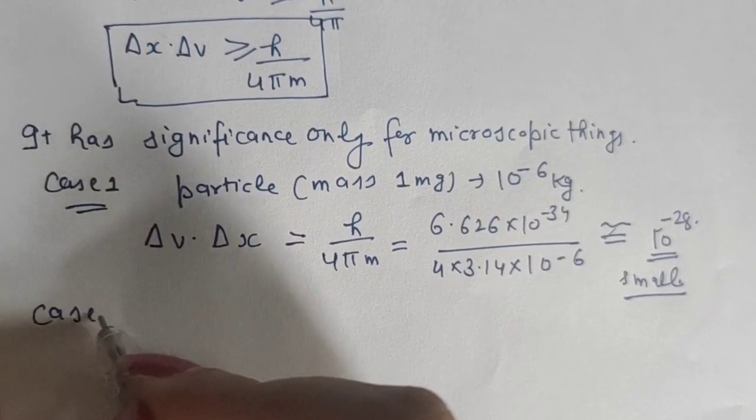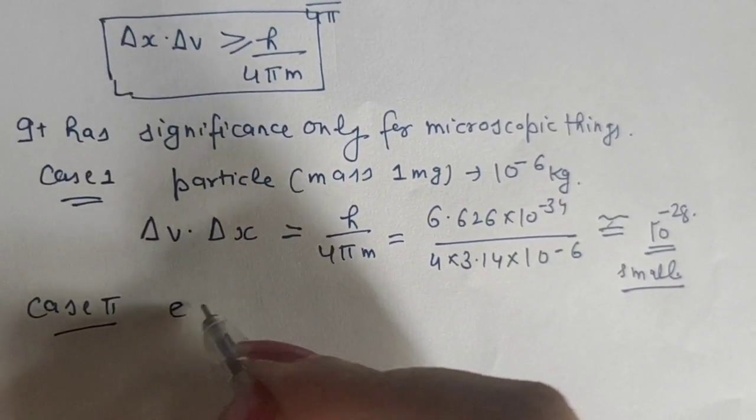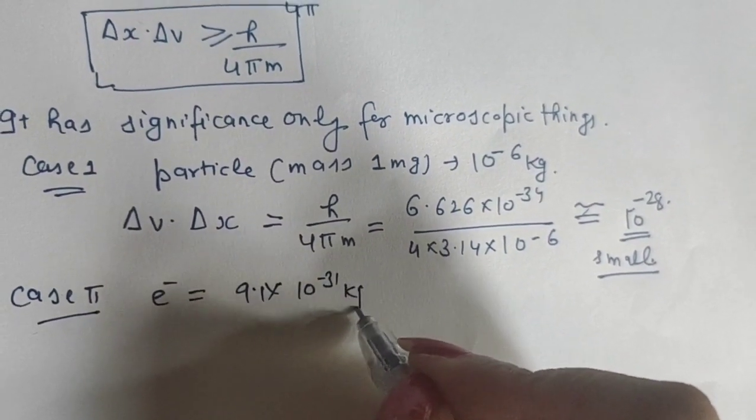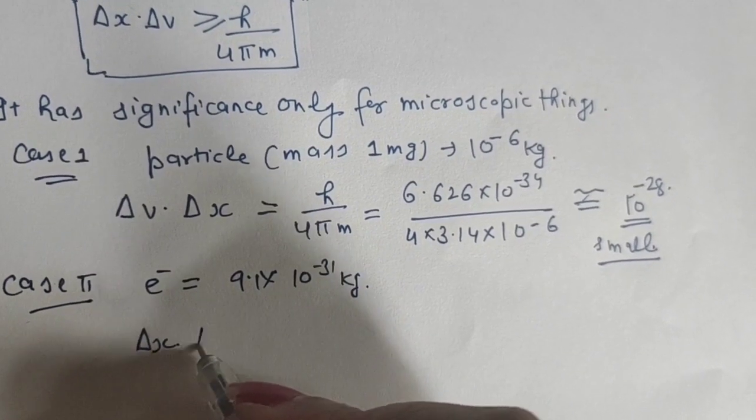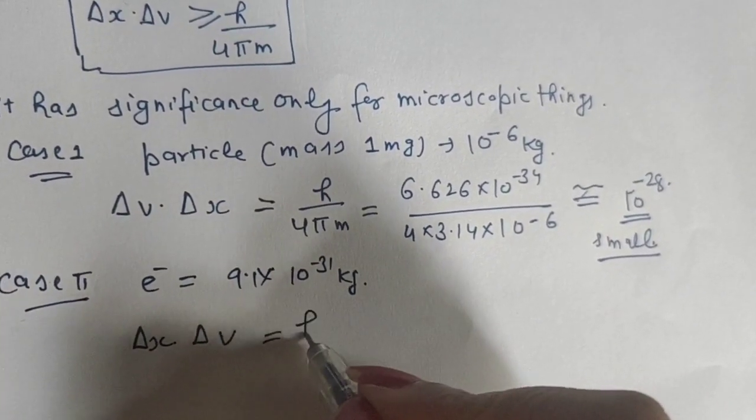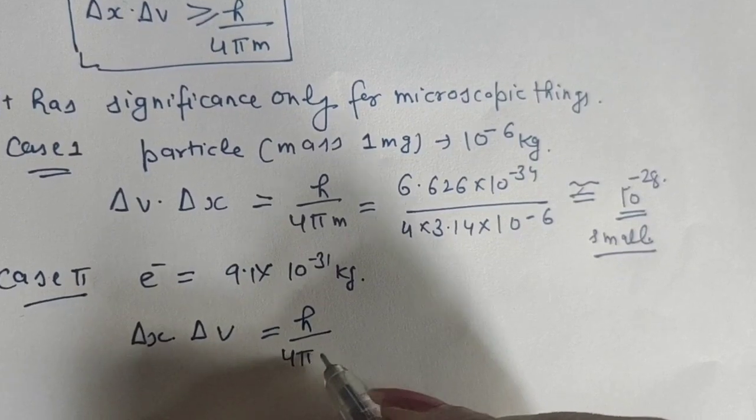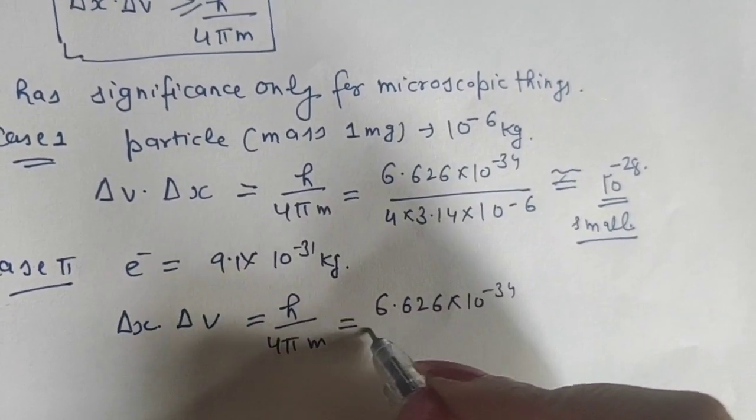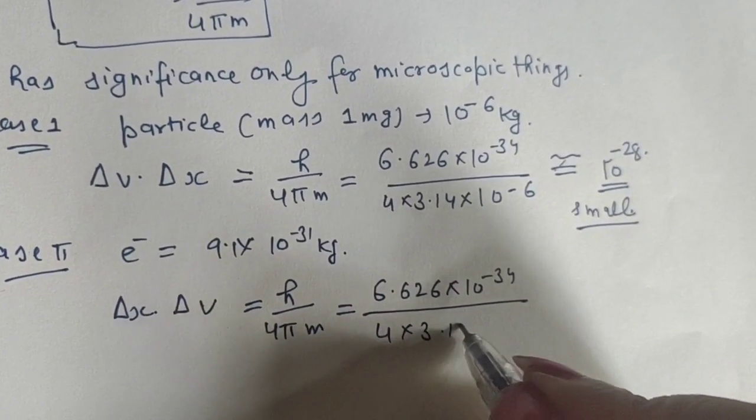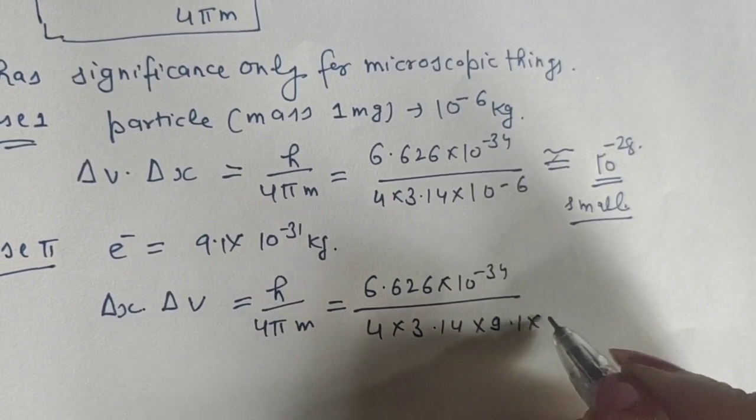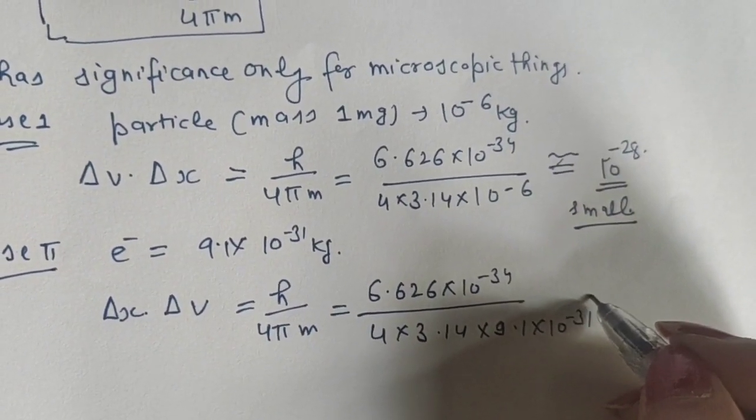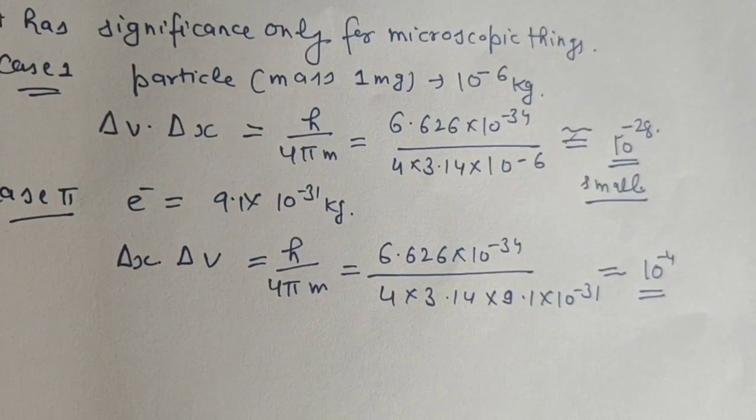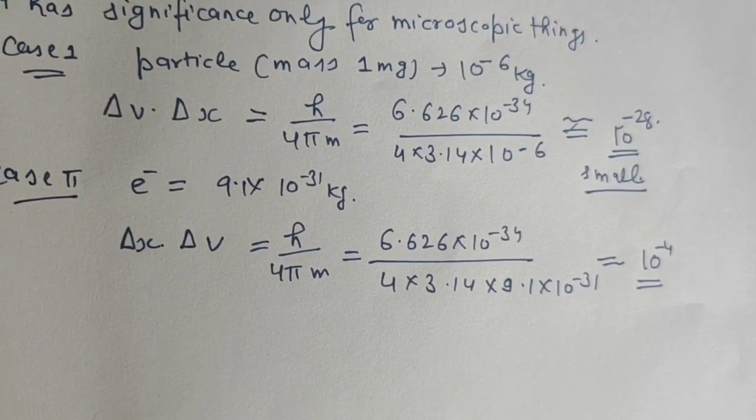Case 2: For an electron, Δv·Δx = h/4πm. Putting values: 6.626×10^-34 divided by 4×3.14, and mass of electron is 9.1×10^-31 kg. This value is approximately 10^-4, which is not a small value and can be measured easily.